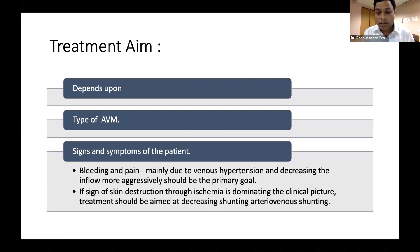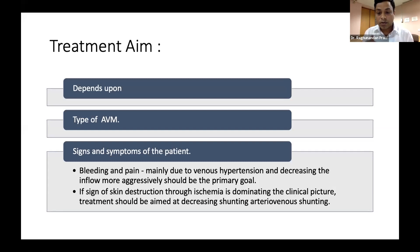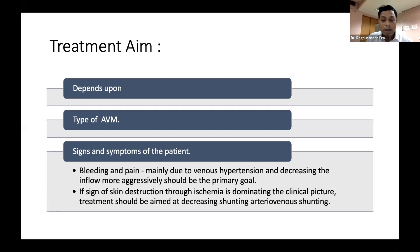On the contrary, if you see a person with skin destruction or a non-healing ulcer, this clinical picture is more suggestive of ischemia due to shunting of oxygenated blood into the venous system, meaning normal tissue is hypoperfused. In this case, your aim should be to reduce the shunt flow and increase flow to normal tissue. Based on the signs and symptoms, one should plan what the aim of treatment is.